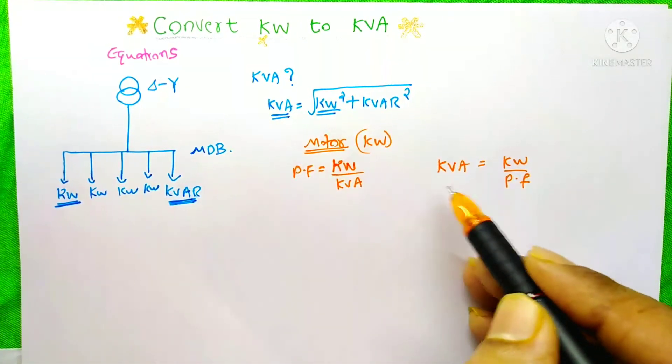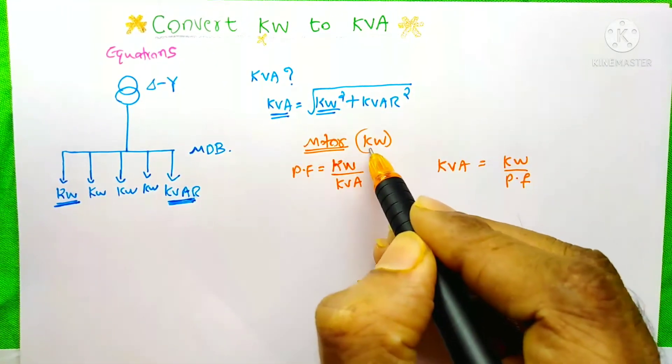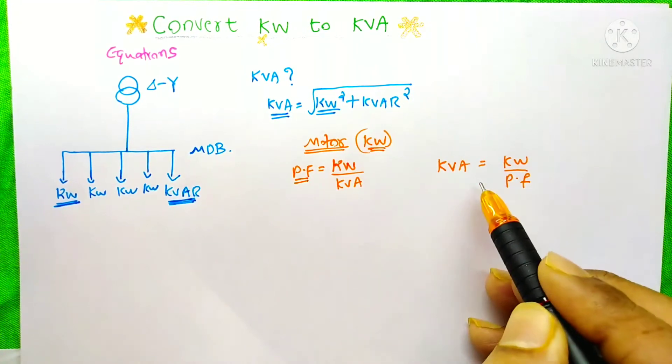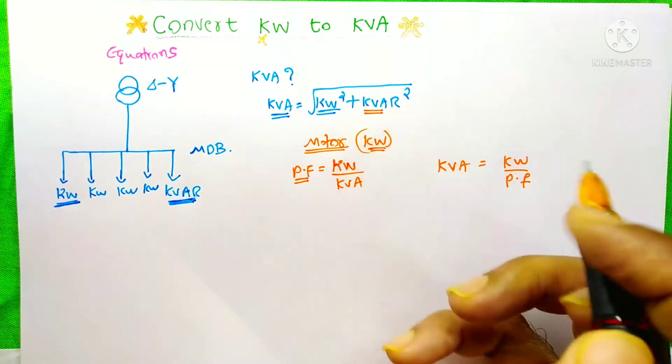Do you know why we have chosen this equation? Because you know, on the motor nameplate, the kW and this power factor is available. That is why we have chosen this equation instead of this one. Because in this equation, we need this kVAR.